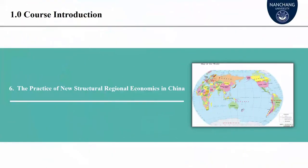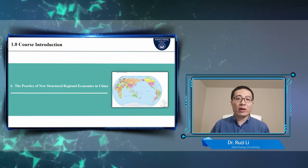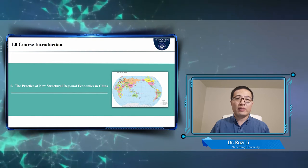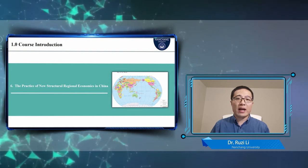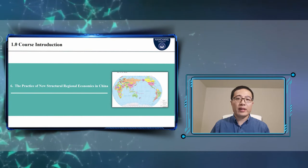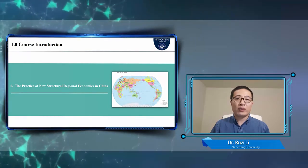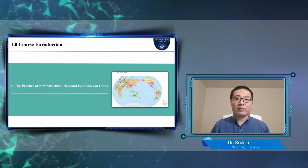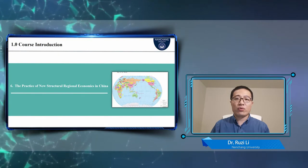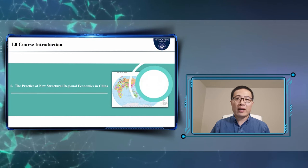Chapter 6 introduces some practice in China. As mentioned above, New Structural Regional Economics is derived from China's economic development since reform and opening up. Therefore, there are many cases, such as poverty governance, China's county development strategy, and so on.